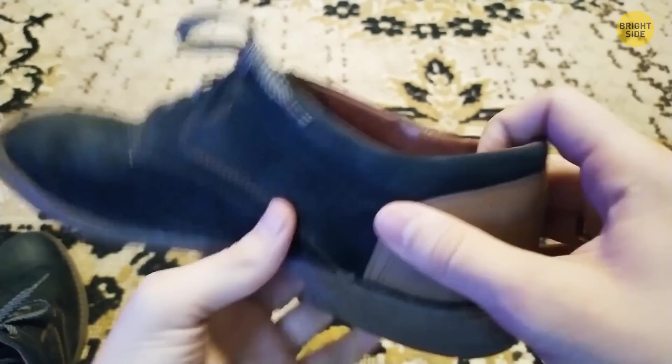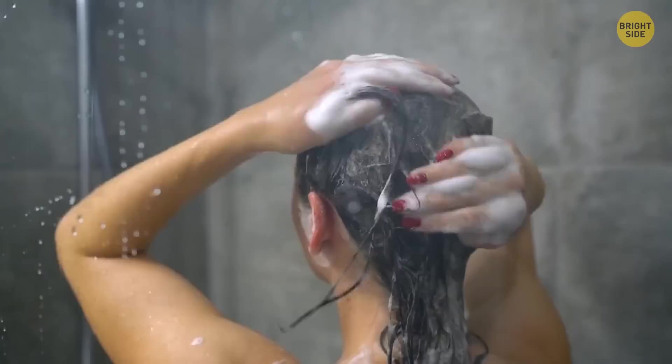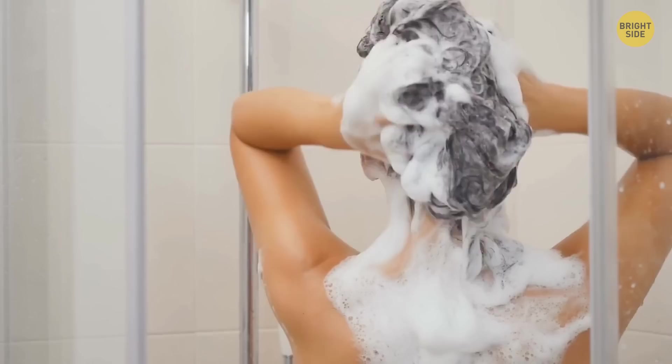You might have been using your shampoo wrong this whole time. Really? Here's the gist. Don't apply it to your hair. Just apply it to the roots. The foam you create will trickle down on your hair anyway.